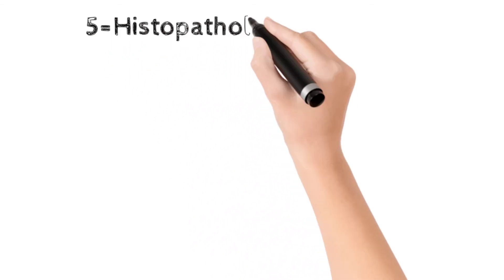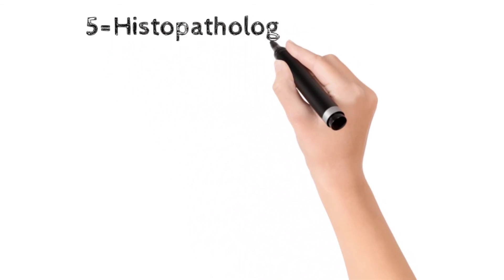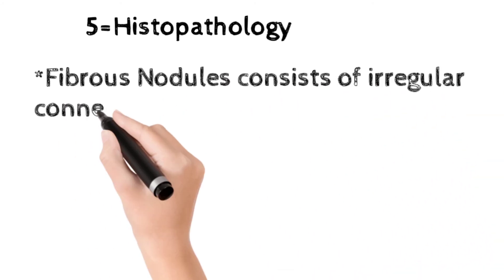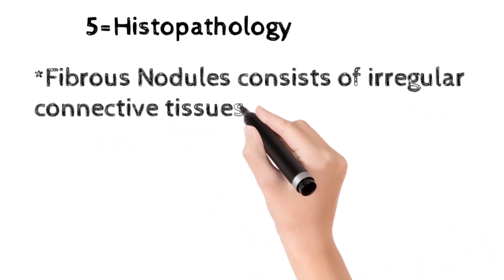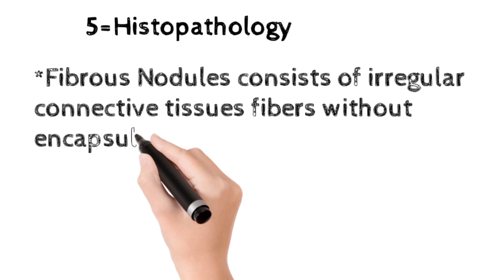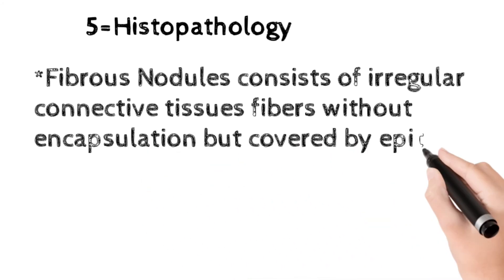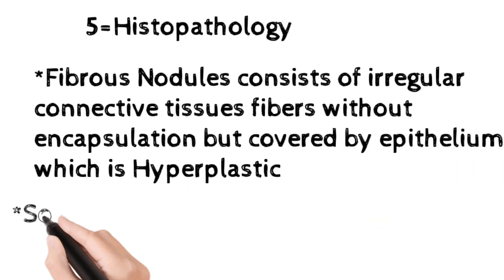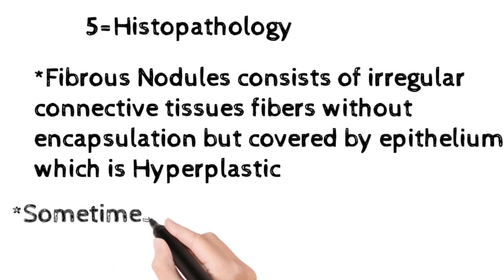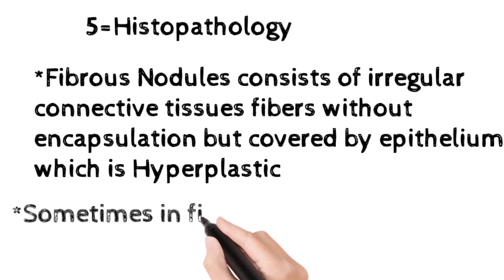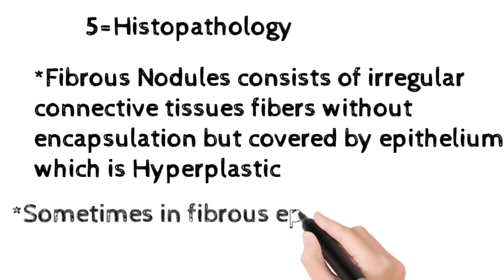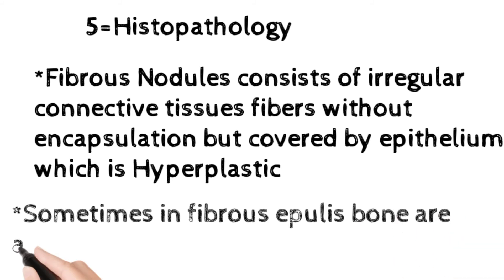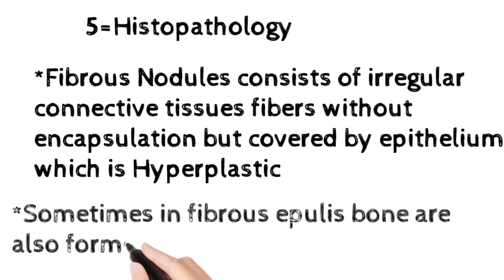Now the histopathology: fibrous nodules consist of irregular connective tissue fibers without encapsulation — meaning they have no capsule — but they are covered by epithelium which is hyperplastic. An important histological point is that sometimes in fibroepulis, bone is also formed.